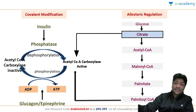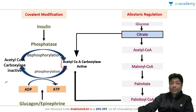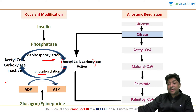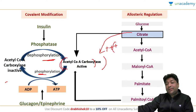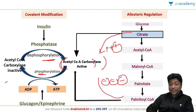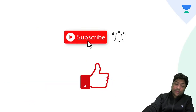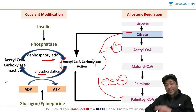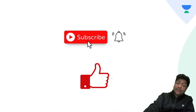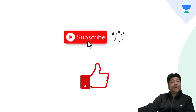So to summarize: acetyl CoA carboxylase is active in the dephosphorylated state and inactive in the phosphorylated state. Once active, citrate can further increase its activity allosterically, and palmitoyl CoA can decrease its activity. This completes the topic of fatty acid synthesis regulation. There will be another session tomorrow at 9:30.